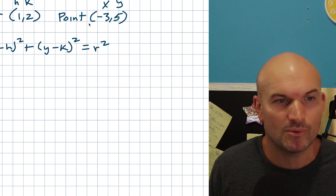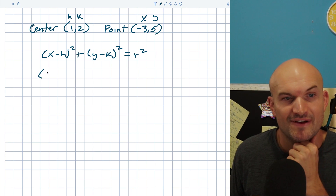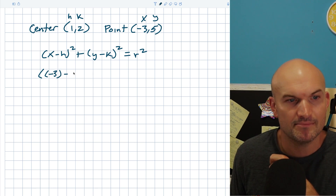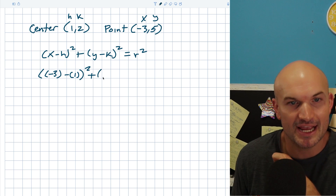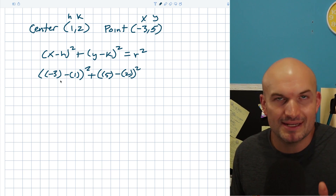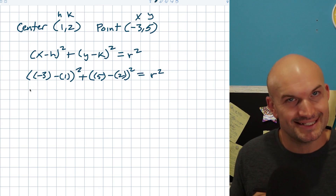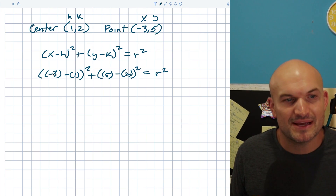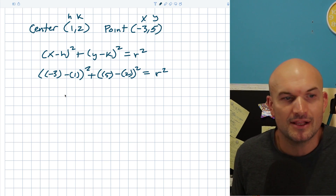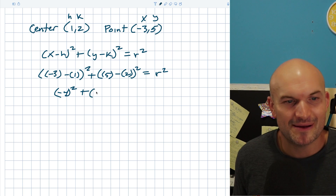Let's plug in the values using parentheses to stay organized. We get (−3 − 1)² + (5 − 2)² = r². That's (−4)² + (3)² = r². Think of it like: you owe me a dollar, you borrow another dollar, now you owe me four dollars — so negative three minus one is negative four. Negative four squared is positive 16, and 3 squared is 9.